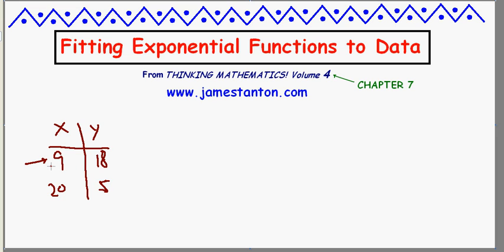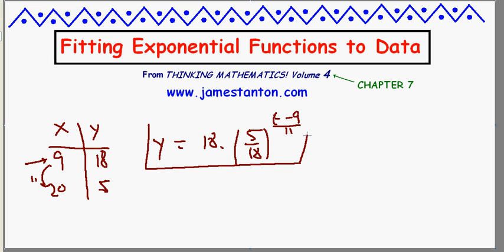Well, I want t equals 9 to behave like 0 and I want things to be slowed down by a factor of 11. Here goes. Y must be, initial value is 18, things are changing by a factor of 5 18ths. I want 9 to behave like 0 and I want everything to be slowed down by a factor of 11. Voila.